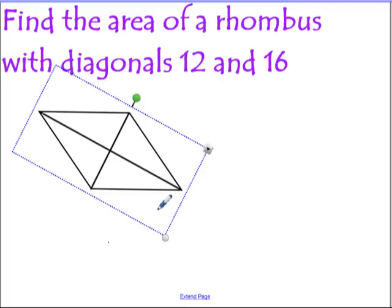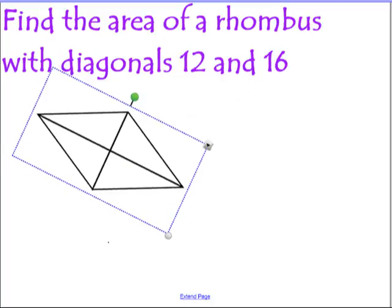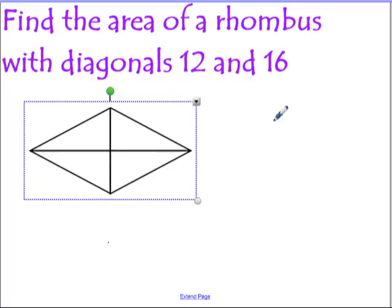But there's a better way. So if you might notice that if we orient it this way, what we really have in a rhombus when we draw those diagonals is four right triangles, and all four of them are the same.